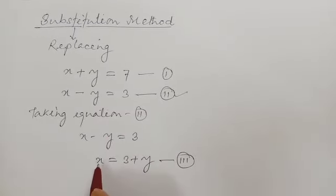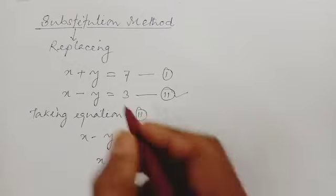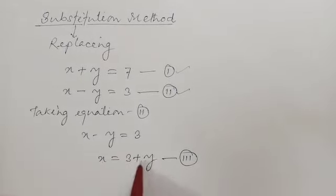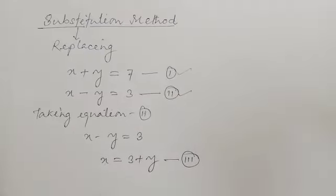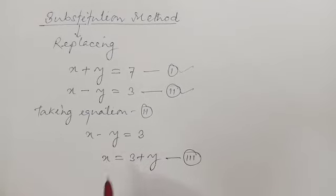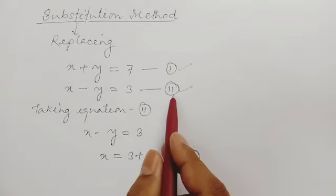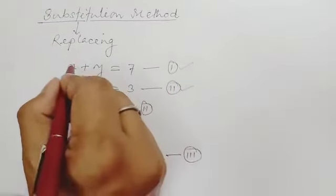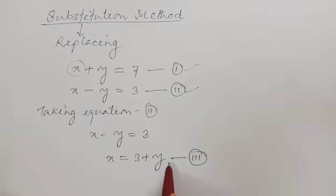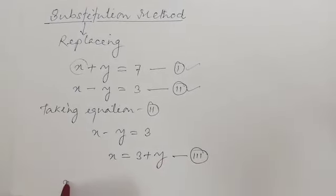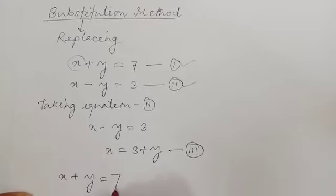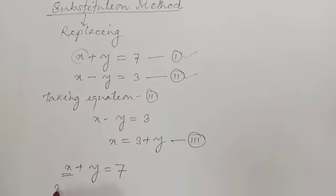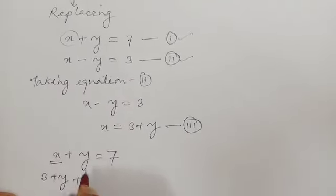Since we got the value of x from equation 2, we can put the value of x into equation 1. Remember, we must not put the value back into the same equation we derived it from. So now put the value of x in equation 1 — in place of x, we put 3 plus y.